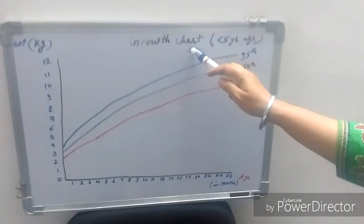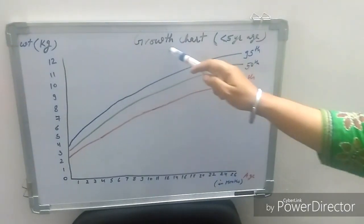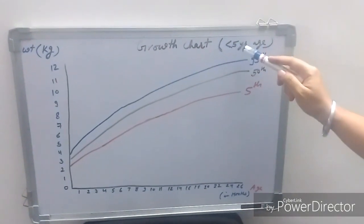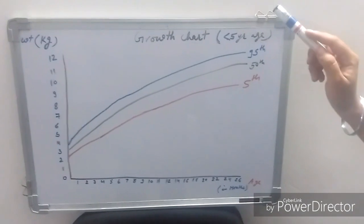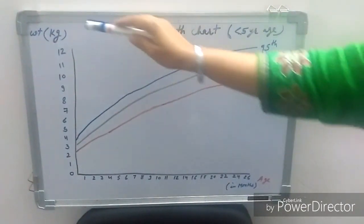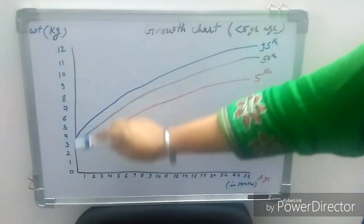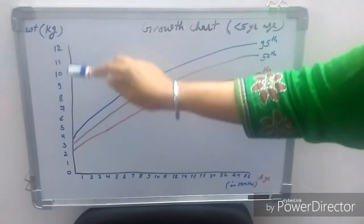This is a growth chart or road to health chart useful for less than 5 year age group patients, and on the y-axis weight in kilograms is plotted.